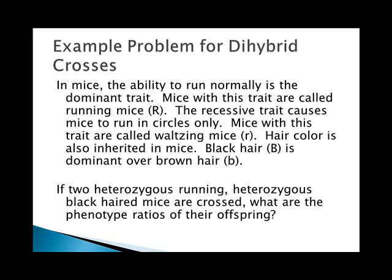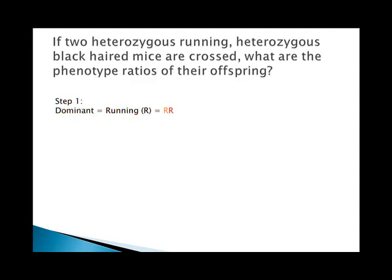The ability to run normally is dominant — these are called running mice. The recessive trait causes them to run in circles — called waltzing mice. Hair color is also inherited: black is dominant over brown. If two heterozygous running, heterozygous black mice are crossed, what are the phenotype ratios of their offspring?